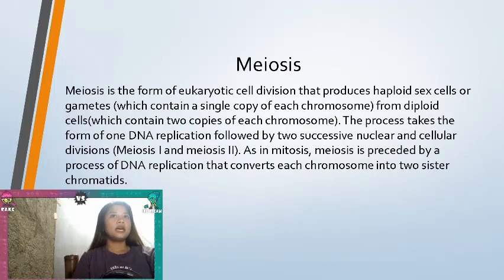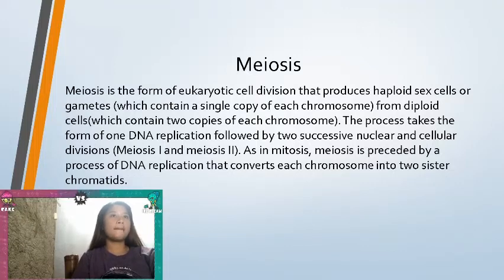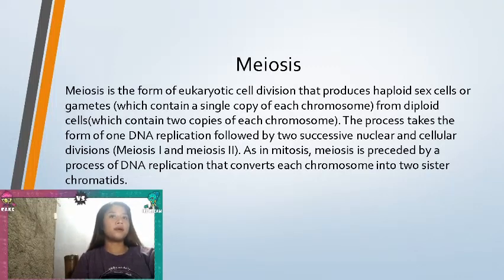Meiosis is the form of eukaryotic cell division that produces haploid cells, or gametes, which contain a single copy of each chromosome from diploid cells, which contain two copies of each chromosome. The process takes the form of one DNA replication followed by two successive nuclear and cellular divisions, meiosis I and meiosis II. As in mitosis, meiosis is preceded by a process of DNA replication that converts each chromosome into two sister chromatids.